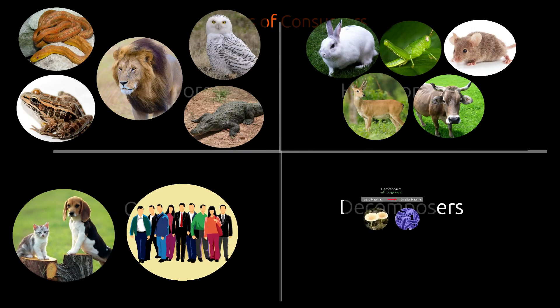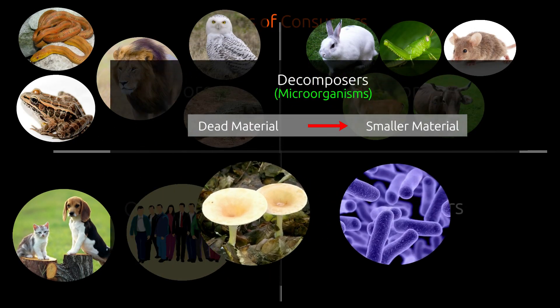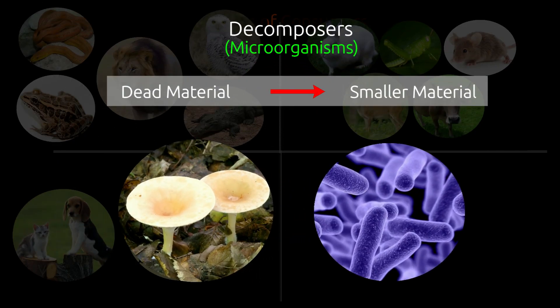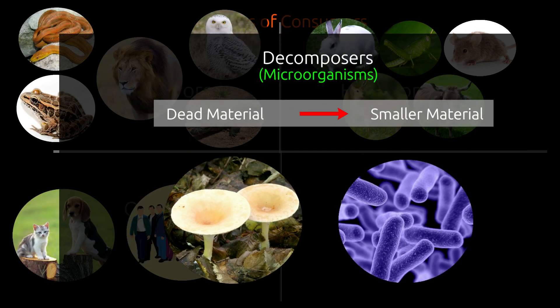Decomposers are the cleaners of dead plants and animals. They get food by chemically breaking down dead materials into smaller parts. Micro-organisms such as bacteria and fungi are examples of decomposers.